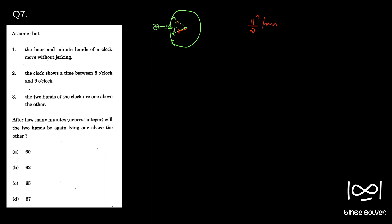If we use the relative speed concept, we can say: when the minute hand travels at 11/2 degrees per minute relative speed, it has to cover 360 degrees after x minutes for the two hands to overlap again. So if you find x, we get 360 multiplied by 2/11. Let me check — that gives 720 by 11.